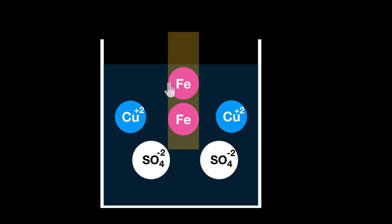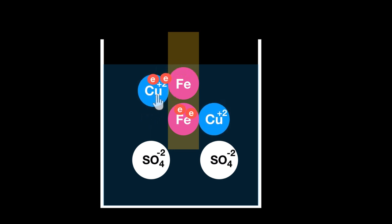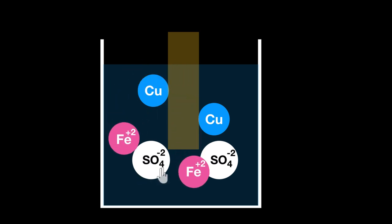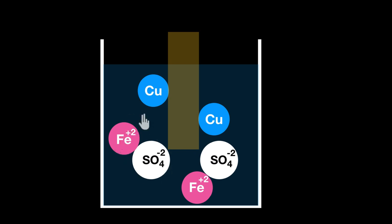Iron can become more stable by losing two electrons. The copper²⁺ ion, being positively charged, needs electrons. So iron loses two electrons and copper²⁺ accepts them, becoming neutral copper atoms that deposit on the iron rod. The iron atom that lost two electrons becomes positively charged (Fe²⁺) and is attracted to the negatively charged sulfate ion, forming iron sulfate. Over time, more copper deposits on the rod and more iron sulfate forms in solution — that's how iron replaces copper from copper sulfate.